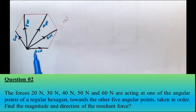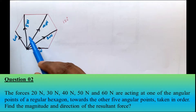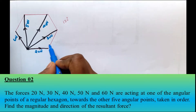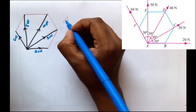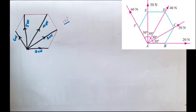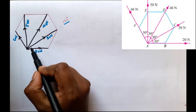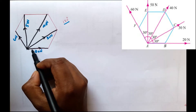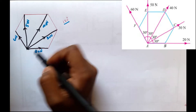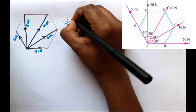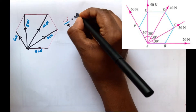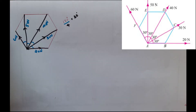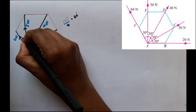Now let's look at the angle. The total angle is 120 degrees, and it is divided among the directions. 120 divided by 4 is equal to 30 degrees. So 1 angle increment is equal to 30 degrees.